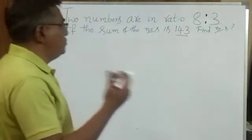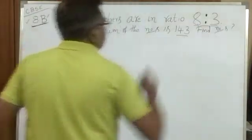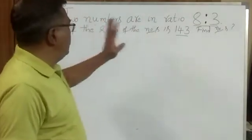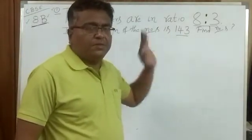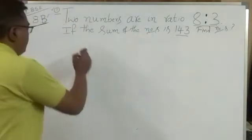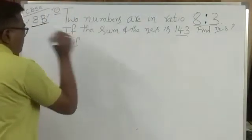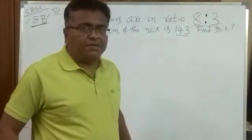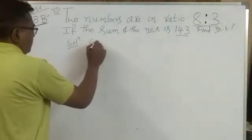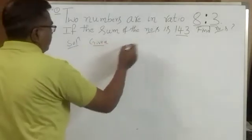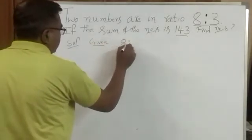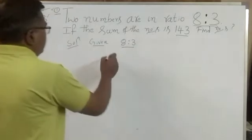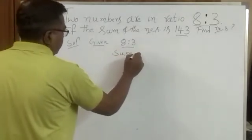Those two numbers are in a ratio of 8 is to 3. If we add those two numbers, the sum will be 143. So we are going to solve this simple problem. First, we are going to write down what is given. Two numbers are there in a ratio of 8 is to 3. This is the first given item. Next, the sum of these two numbers is 143.